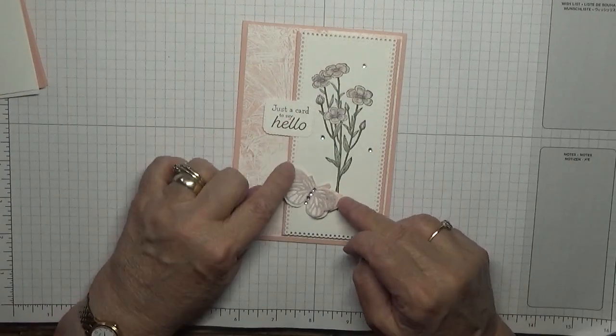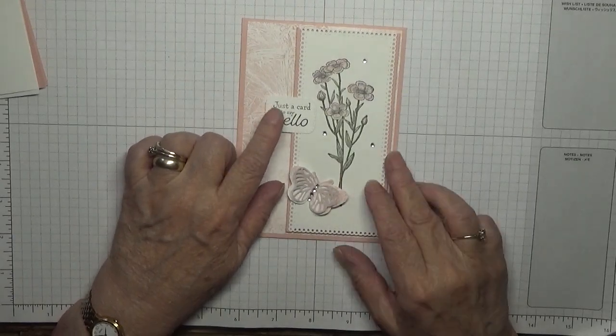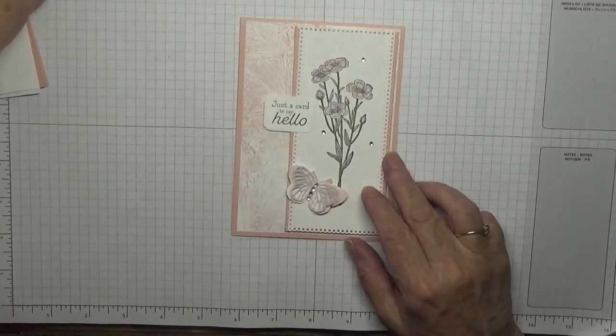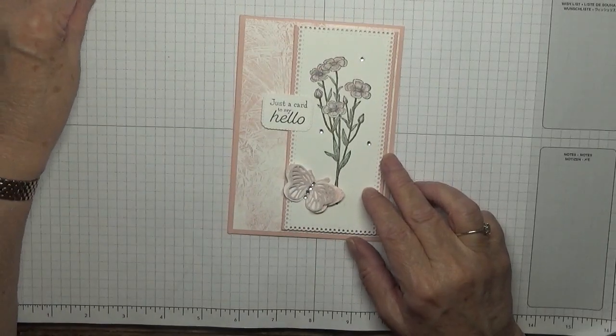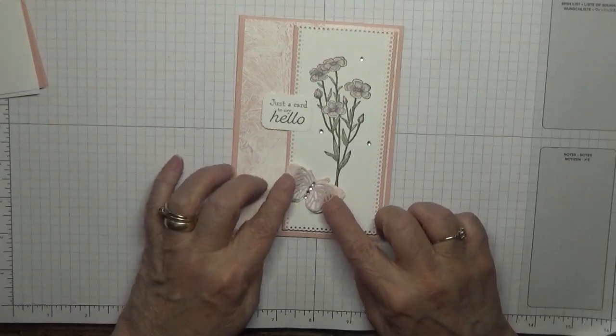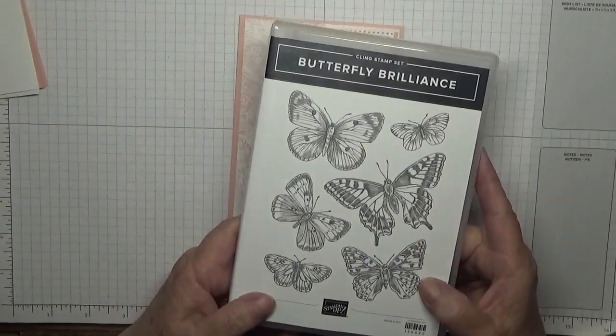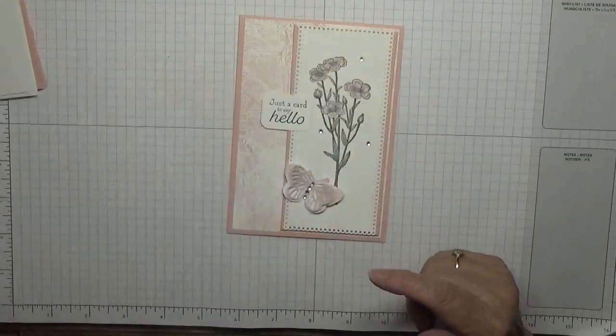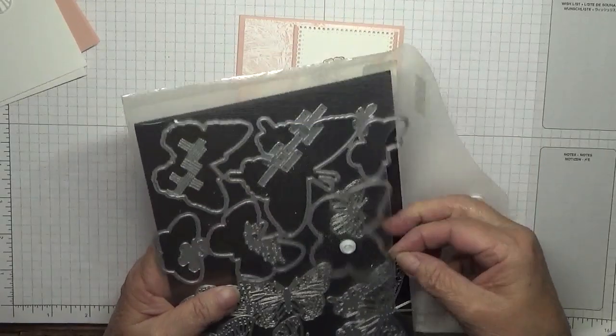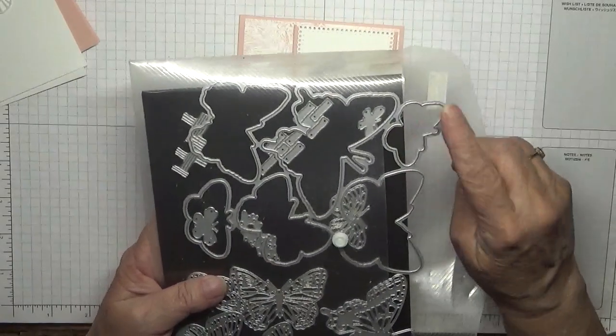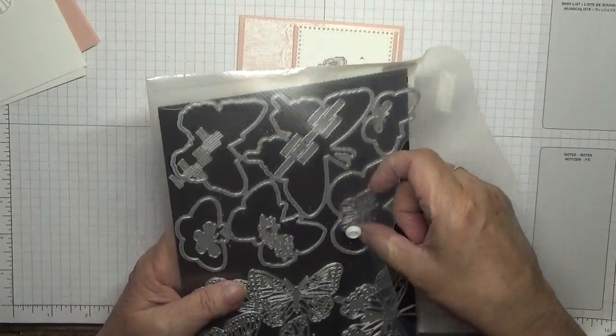I'm just using that image there, the flowers. The sentiment came from Many Messages, and if you've watched my previous videos you know I stamped out and cut a load out. This just says just a card to say hello. The butterfly has come from the Butterfly Brilliance, not the stamp set but the dies.